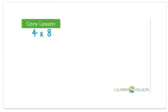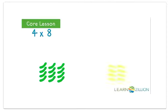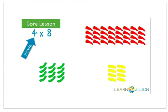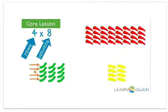What would the array look like for four times eight? Here are three arrays. Let's decide which one matches that expression. Four times eight means four rows of eight columns. The array of cucumbers shows four rows and then a group of eight more, not eight columns.